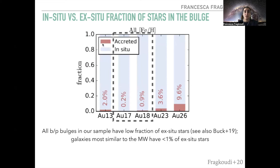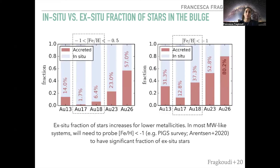Looking at the ex-situ fraction — shown in red for the five galaxies — the ex-situ fraction in the bulge is quite low in all five, but especially for Auriga 17 and 18, which look most like the Milky Way chemodynamically: less than 1% of stars are formed ex-situ, meaning over 99% of the bulge in these two galaxies has an in-situ origin. Even in the metal-poor range from −1 to −0.5, the ex-situ fraction remains very low. We really have to go to metallicities below −1 to begin probing higher fractions of ex-situ stars in galaxies with such quiescent merger histories.